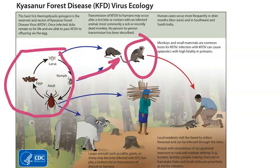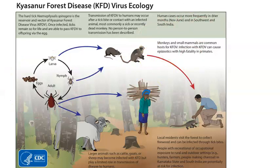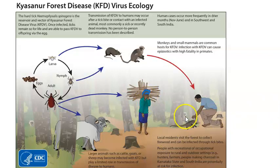The hard tick is both the reservoir and vector of the virus. The monkey is the host, and from the monkey the disease comes to humans. If you pet a sick monkey or touch a dead monkey's carcass, you may get infected. This is happening in South India. Direct tick-to-human transmission is also possible, but human-to-human transmission has not been reported, nor has transmission via animal milk.